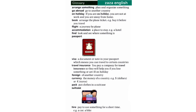Passport — you have the picture. Visa: a document or note in your passport which means you can travel to certain countries. Travel insurance: you pay a company for travel insurance so they will help you if you lose something or are ill on holiday.